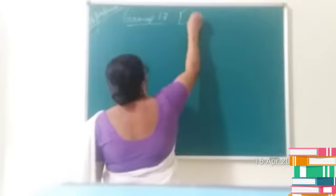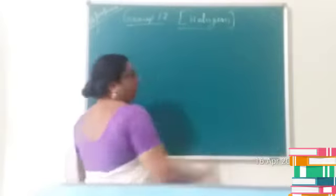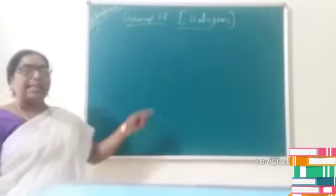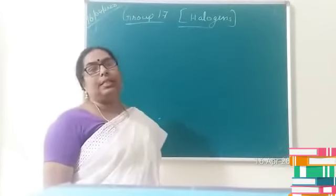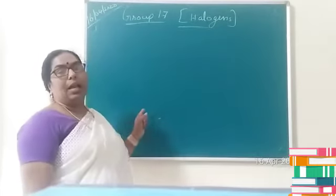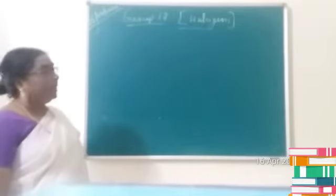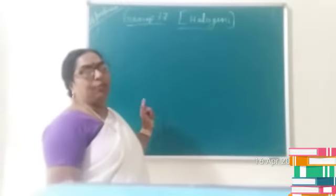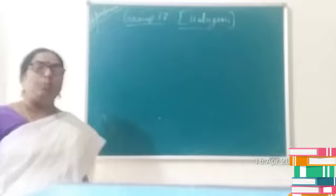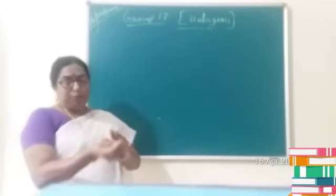Good morning children. Let us start with Group 17. Group 17 elements are otherwise termed as halogens. Halogen is a Greek word in which 'halo' means salt and 'genes' means producers, so halogens means salt producers. Group 17 is termed as halogens since they are salt-producing elements, and since fluorine is the first member of the group, it can also be termed as the fluorine family.